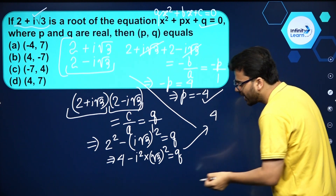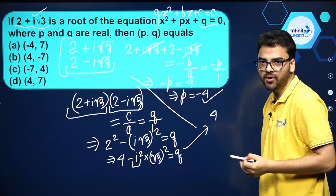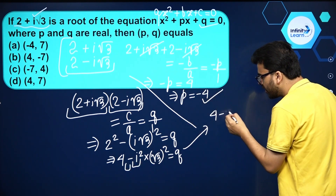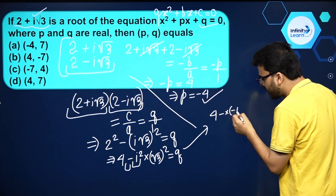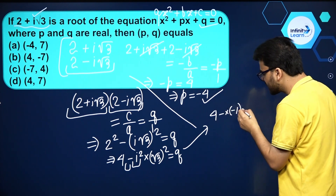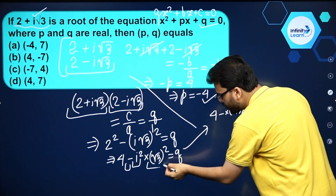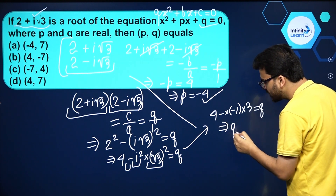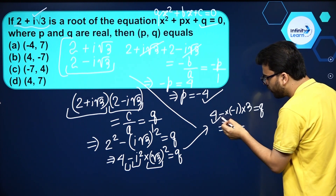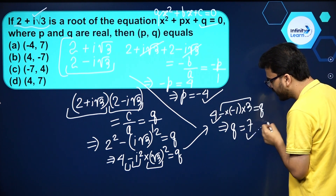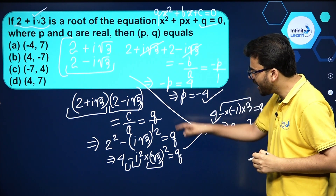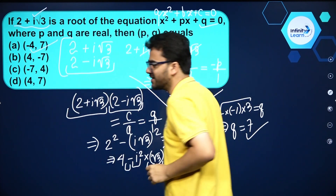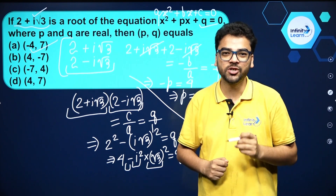Simplifying further: this is 4, and i² is -1. So we have minus times minus 1 times 3, which gives minus 1 × minus 1 × 3 = 3. Therefore q = 4 + 3 = 7. So q = 7 and p = -4, giving us the final answer: p = -4, q = 7. I hope it is clear to every student watching this.